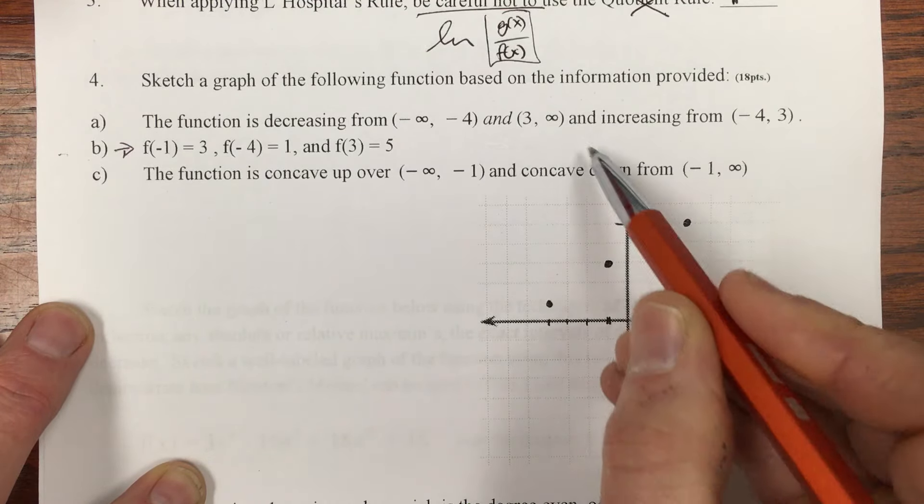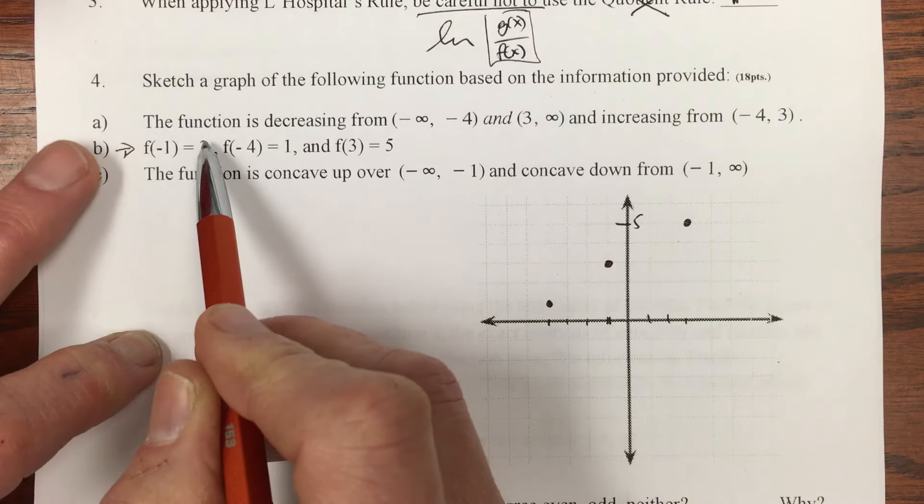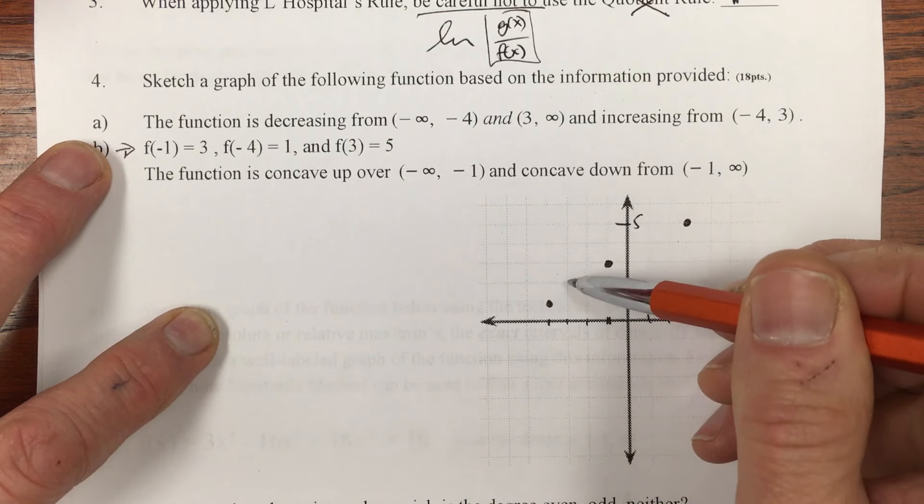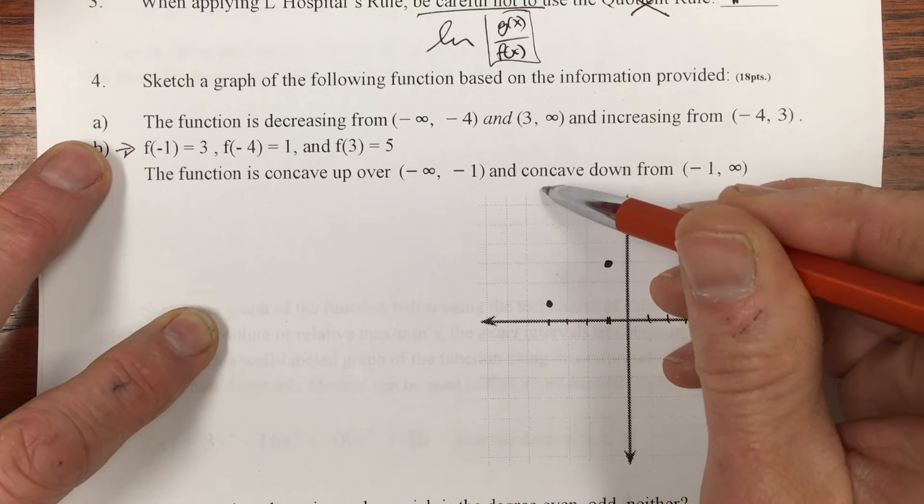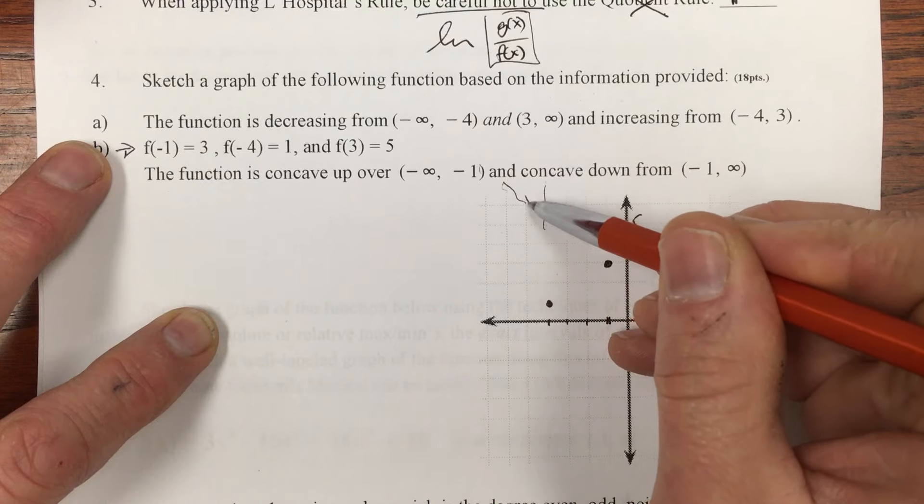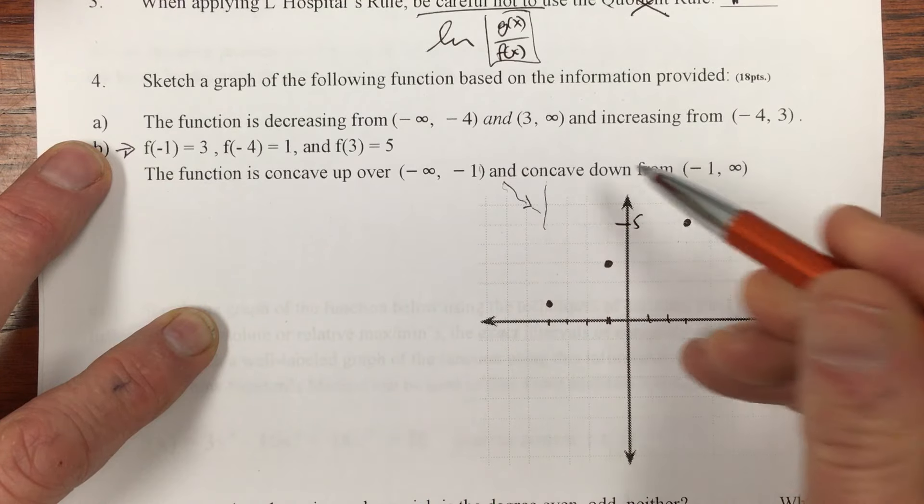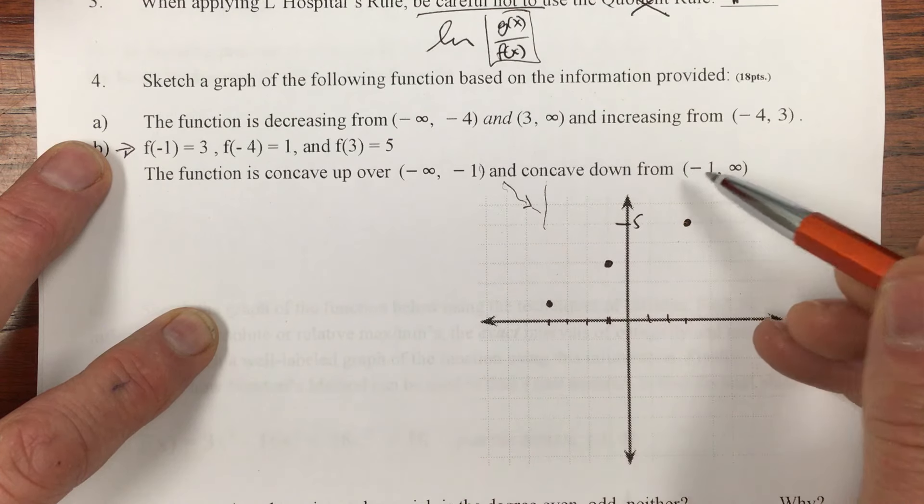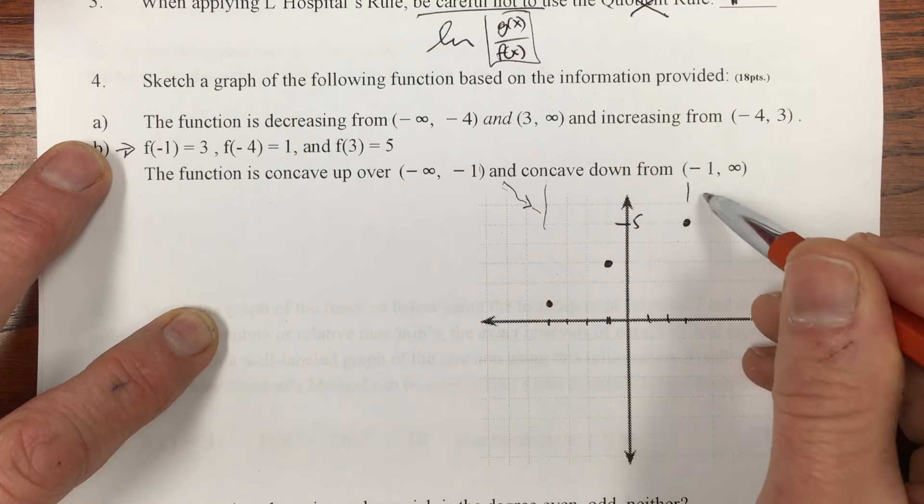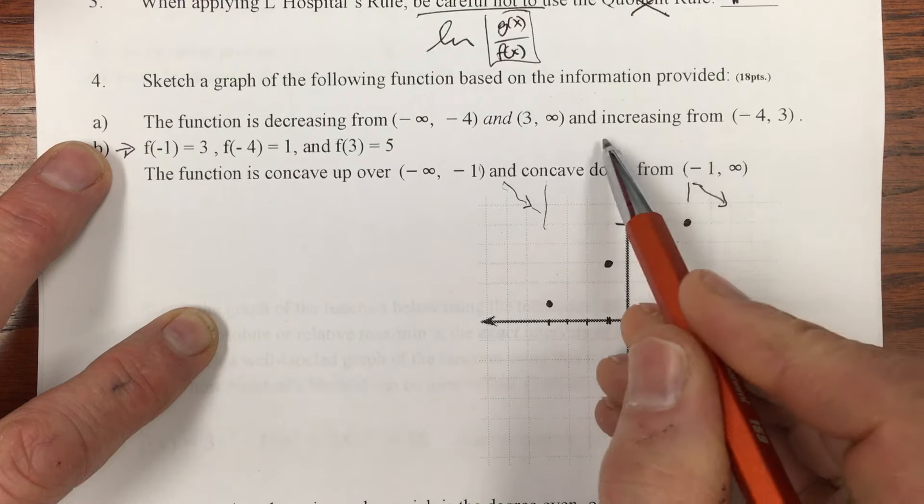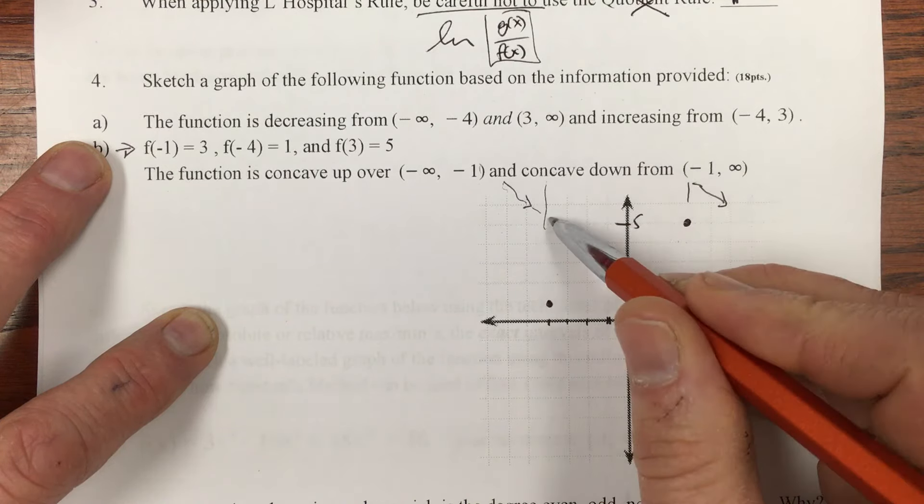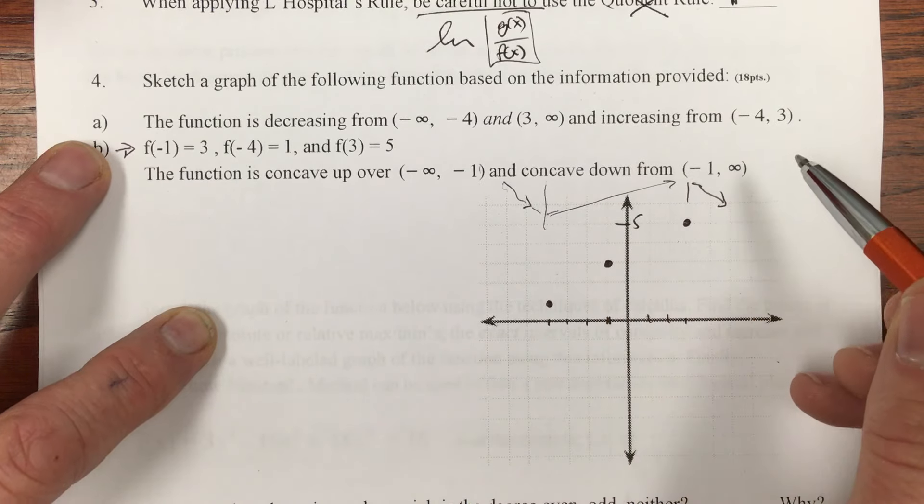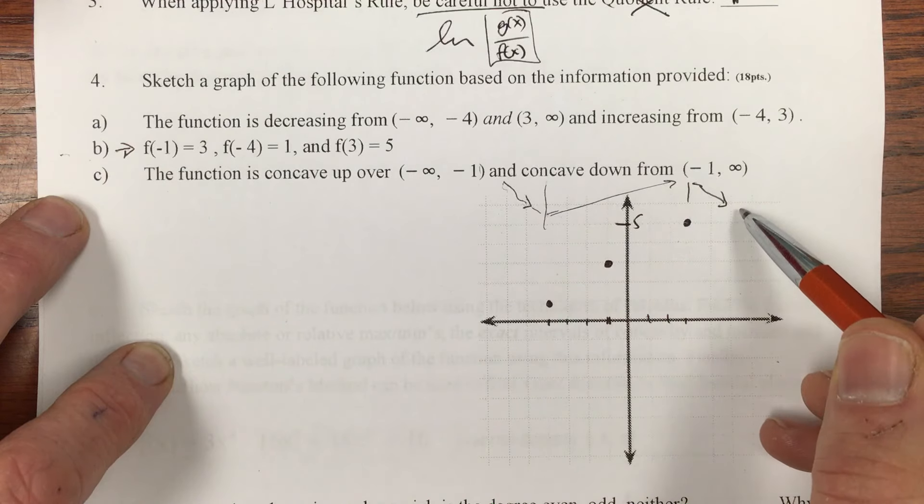We then know that the function is decreasing from negative infinity to -4, so it's heading down all the way up to that barrier, and then also at 3 to infinity. So here it's going down and increasing from -4 all the way up to -3. So it's going down, up, and down again.